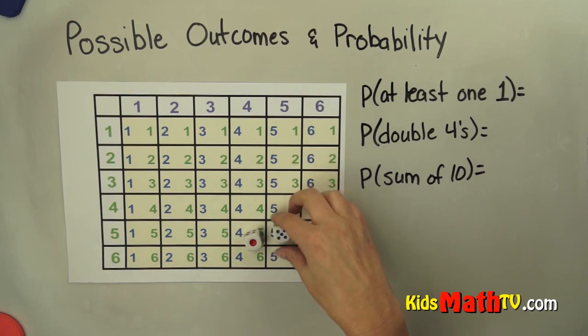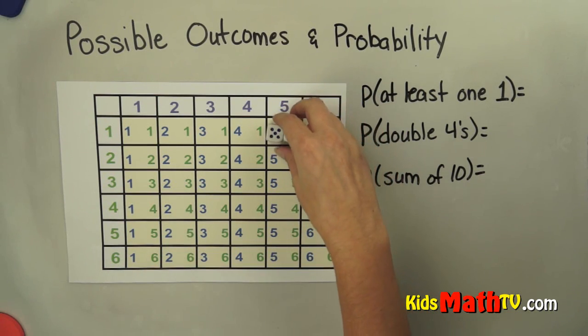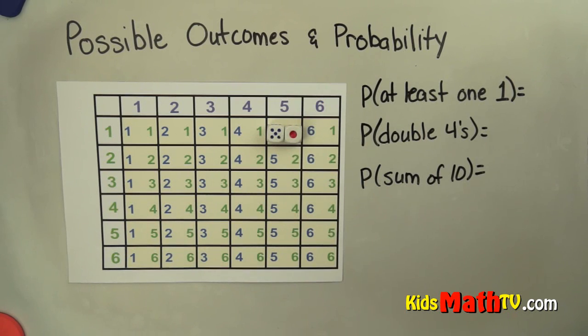This happens to be a 5 and a 1, like right there, so 5 and a 1. That's one of the possible outcomes.